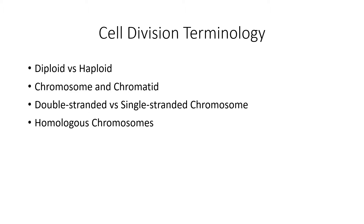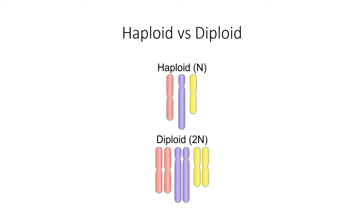We're going to talk about diploid and haploid. We're going to talk about chromosomes and chromatids, double-stranded or single-stranded chromosomes, which is basically a replicated versus a non-replicated chromosome. And then we'll talk about homologous chromosomes. So maybe in a previous biology course, you've heard of these terms — diploid and haploid.